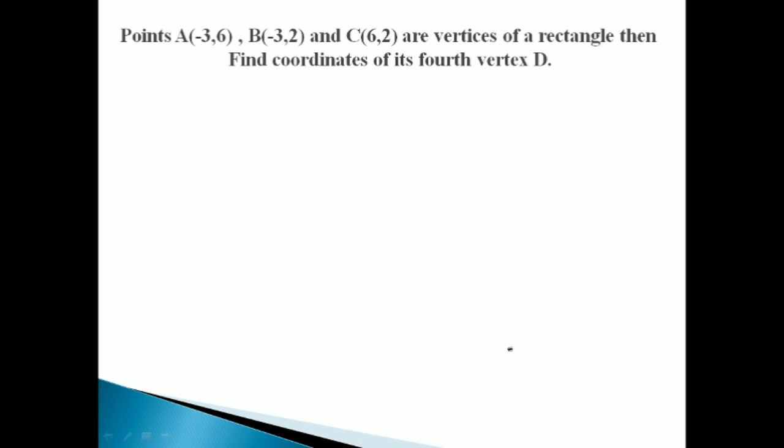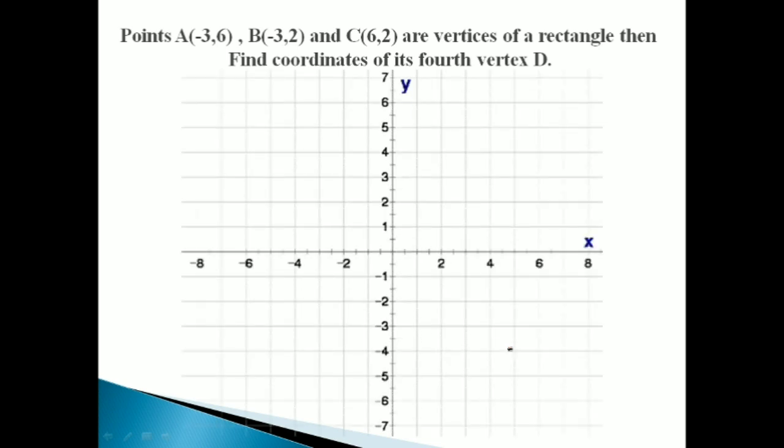Let us see a worked example: Points A(-3, 6), B(-3, 2), and C(6, 2) are vertices of a rectangle — find the coordinates of its fourth vertex D. तो पहले अपने पूरे page को Cartesian plane माना। इसके अंदर we have to plot three points A, B, and C whose coordinates are already given। First number will tell you how to travel horizontally, and second number will tell you how to travel vertically।